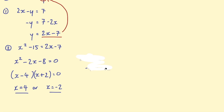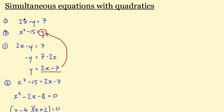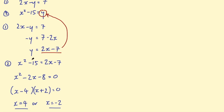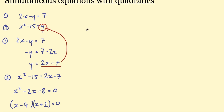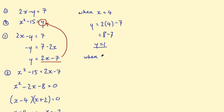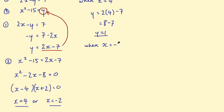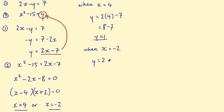Now I have two values of x, I can substitute them into one of the original equations to find the values of y. I'll use y equals 2x minus 7 as it looks the easiest. When x equals 4, y equals 2 times 4 minus 7, which is 8 minus 7, so y equals 1. Then when x equals minus 2, y equals 2 times minus 2 minus 7, so y equals minus 11.